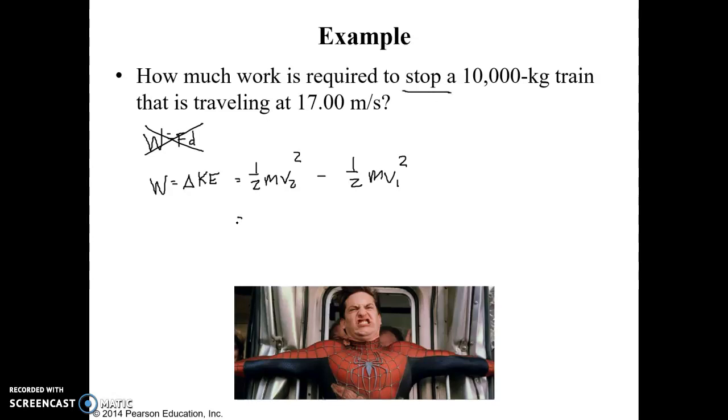And so 1 half mv2 squared is just going to be 0. That's going to make that whole term 0.